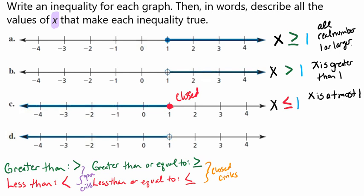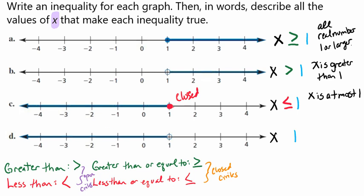Let's try letter D. We're still going to have X and still have the number 1. Our variable is still on the left-hand side, and we need to figure out which direction our arrow is pointing — and here we see it's pointing to the left, so our symbol will also point to the left. When we look at our circle, we see that it is open, so there won't be a line underneath it. In words, we might say X is less than 1.